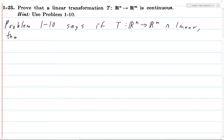then there is some constant M such that for every single h in R^n, the norm of T(h) is less than or equal to M times the norm of h.